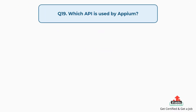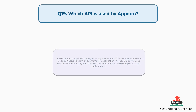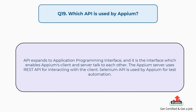Question number 19: Which API is used by Appium? API expands to application programming interface, and it is the interface that enables Appium's client and server to talk to each other. The Appium server uses REST API for interacting with the client. Selenium API is used by Appium for test automation.